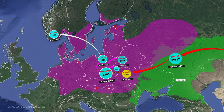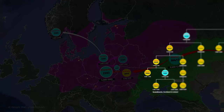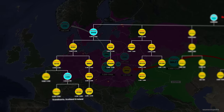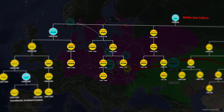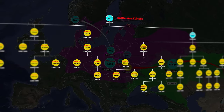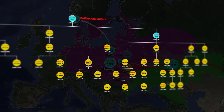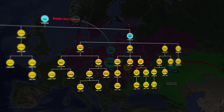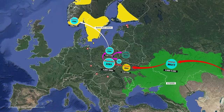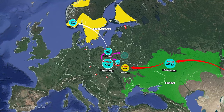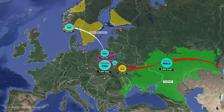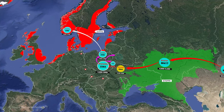Looking at the haplogroup tree of R1a Z284, this paternal lineage is related to the Battle Axe culture that flourished in the coastal regions of southern Scandinavia and southwestern Finland from about 2800 BC to about 2300 BC. Z284 is also found in places colonized by Norwegian Vikings, such as Scotland, England, and parts of Ireland.